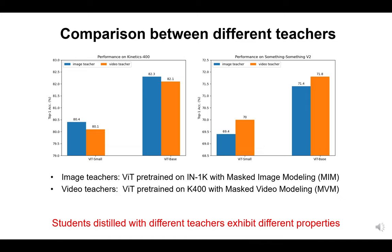For video representation learning, we have more choices compared with image representation learning, because we can use either image models or video models to generate target features. Here we use different teachers in the MVD framework and evaluate the performance of student models on different video datasets. Specifically, the image teacher is a vision transformer pre-trained on ImageNet with masked image modeling, and the video teacher is a video transformer pre-trained on Kinetics 400 with masked video modeling. We observe that students pre-trained with image teachers perform better on Kinetics 400, which relies more on static spatial information, while students pre-trained with video teachers perform better on Something-Something V2, which relies more on temporal dynamics in the video.